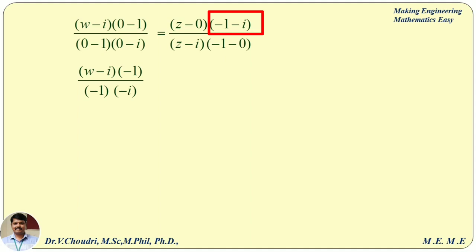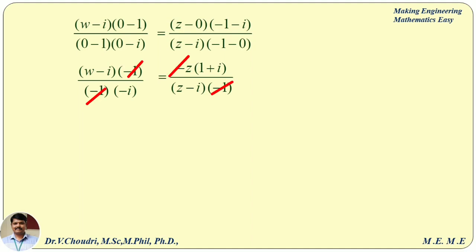Take minus 1 common from the numerator, giving minus z times (1 plus i) divided by (z minus i) times minus 1. Cancelling all the minus signs from left-hand side and right-hand side, we get: (w minus i) divided by minus i equals z times (1 plus i) divided by (z minus i).